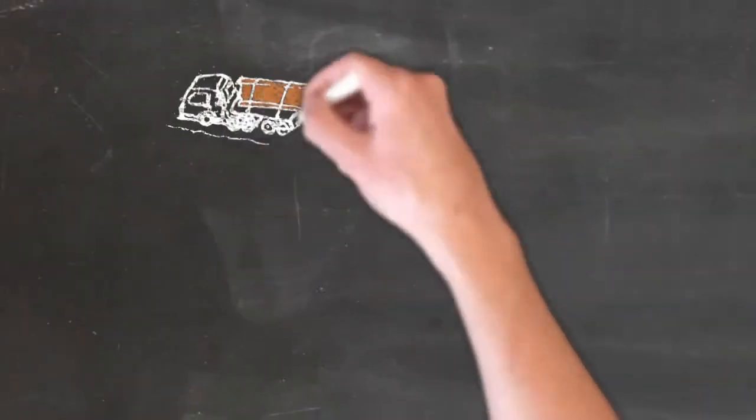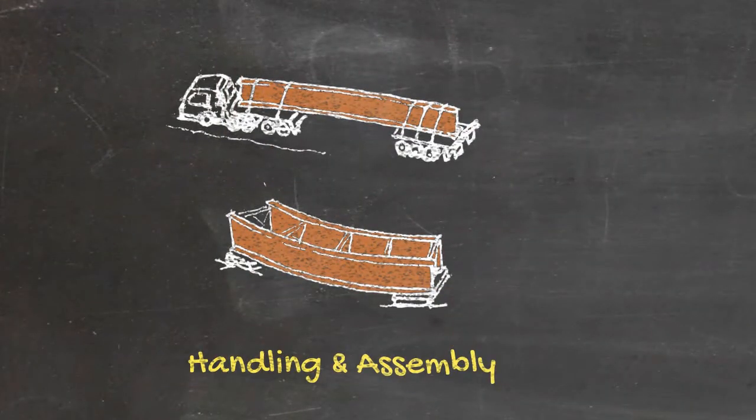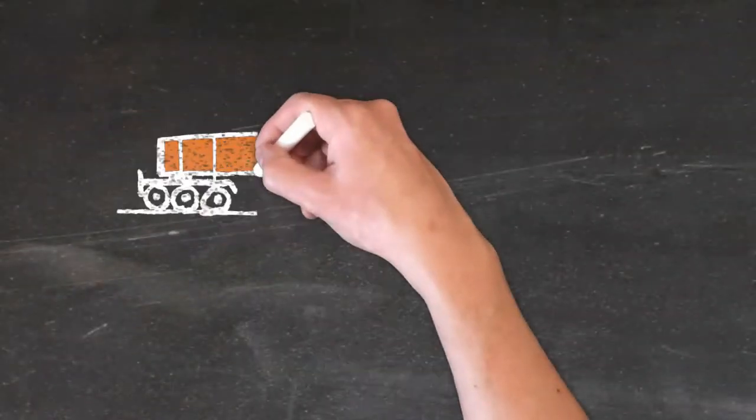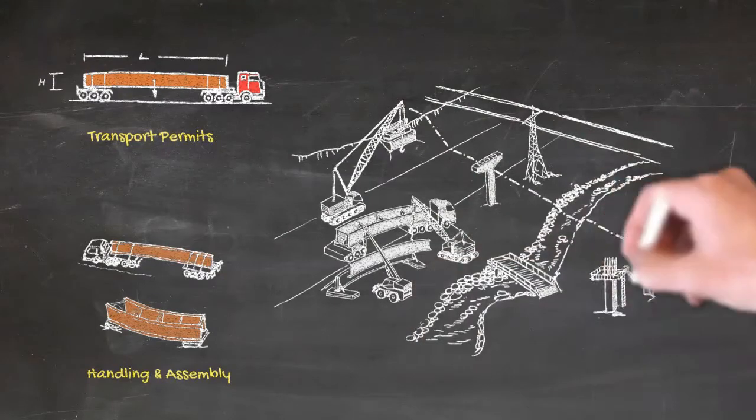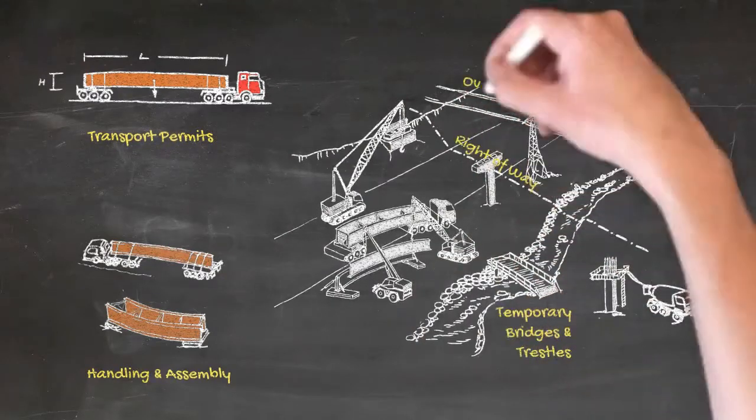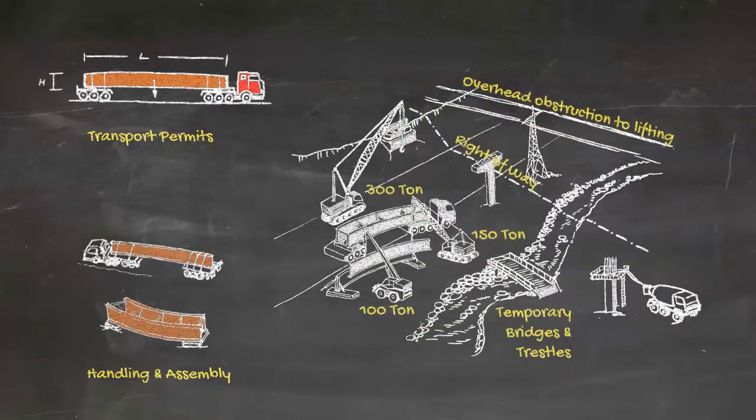Think about how the girders would be transported and staged for assembly at site. Pick your supervisor's brain on logistics for transport, access for construction of substructures, right-of-way and site obstructions, and rough sizes and positioning of cranes.